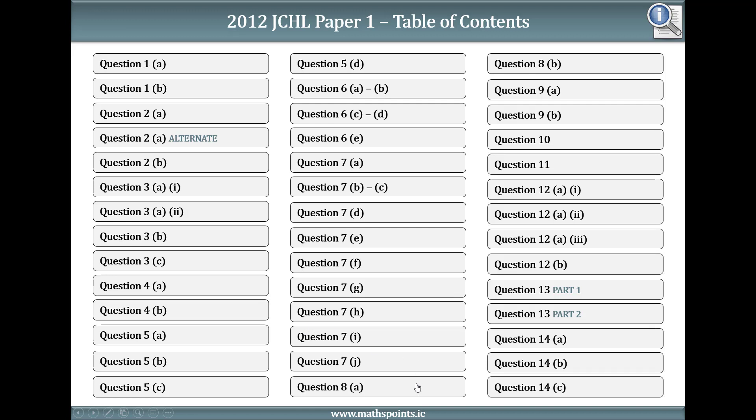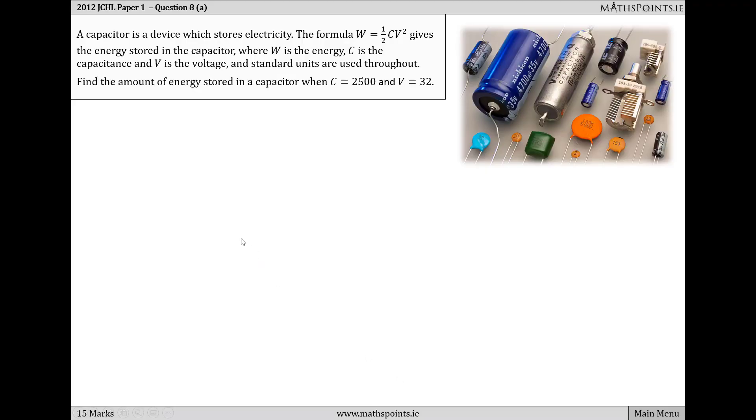Let's look at this algebra question from the Junior Certificate Higher Level 2012 Paper 1. It's question 8 and it says a capacitor is a device which stores electricity. The formula W equals a half CV squared gives the energy stored in the capacitor, where W is the energy, C is the capacitance, and V is the voltage.